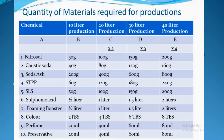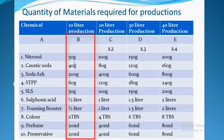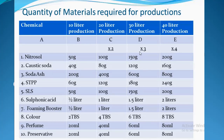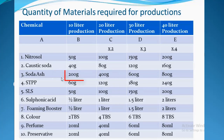The same logic applies for 30 liters: multiply all the quantities in column B by 3. For example, nitrosol: 50g × 3 = 150g. Caustic soda: 40g × 3 = 120g. Do this for all materials and you arrive at the quantities shown in column D.